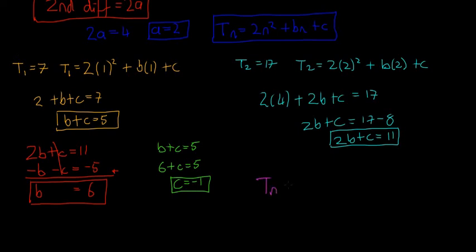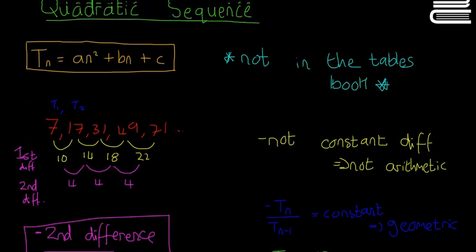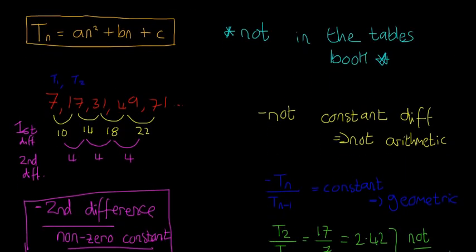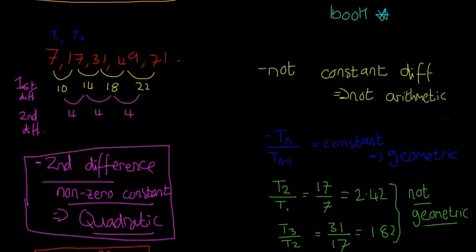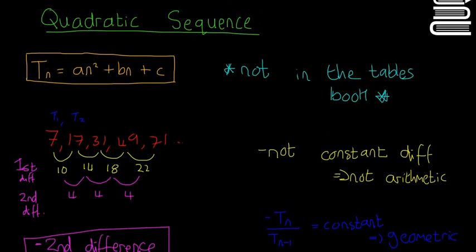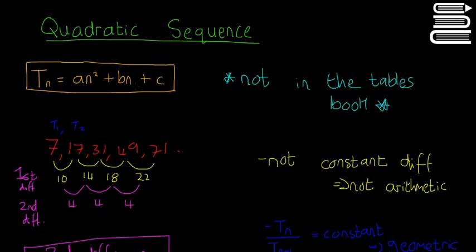Our final answer is T(n) = 2n² + 6n − 1. To recap: you need to know the formula T(n) = an² + bn + c (not in the tables book), that the second difference being a non-zero constant means quadratic, and that the second difference equals 2a. We'll look at more quadratic sequences in picture form in a few videos, and next time we'll look briefly at cubic sequences.